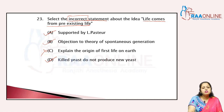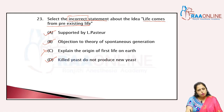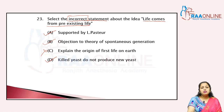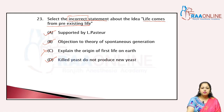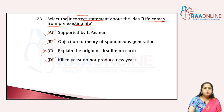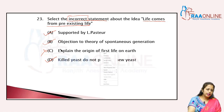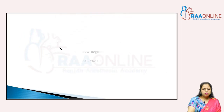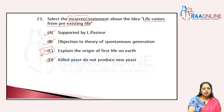All these statements are correct and related to the theories, but the concept of life from pre-existing life cannot explain the origin of the first life on Earth. So the incorrect statement is C — it cannot explain the origin of first life on Earth. The answer in terms of the incorrect statement is C.